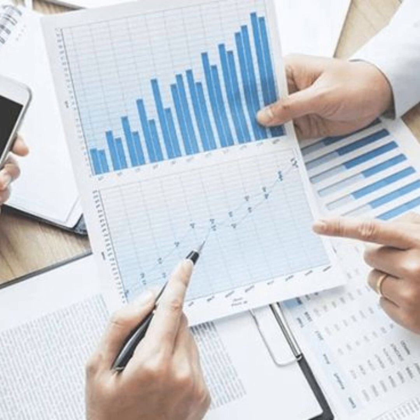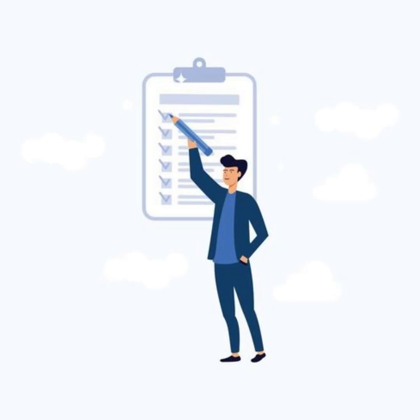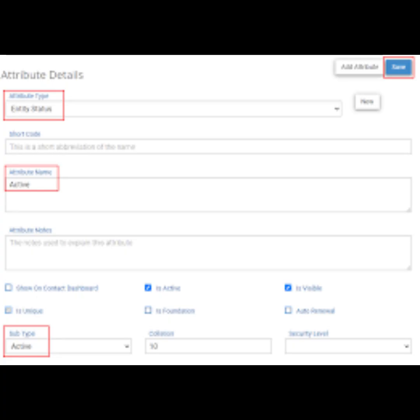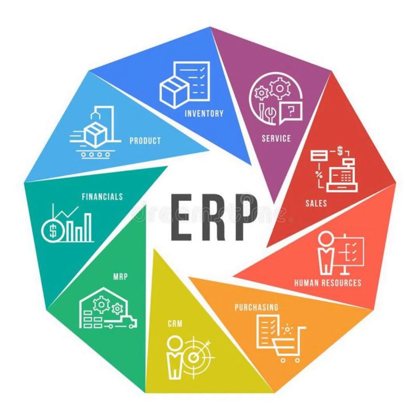That's a win. I've seen consultants spend hours writing custom code to fix this, when all they needed was this checkbox. This active checkbox is more powerful than it looks — it's not just for billing. It affects all sorts of stuff in Acumatica. If you understand how contact types and that active status impact different modules, it can save you so much trouble.